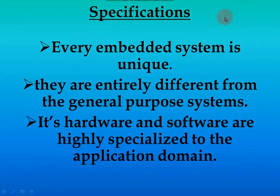Now, what are the specifications of an embedded system? Specifications means the special characteristics that an embedded system possesses. First: every embedded system is unique — meaning every embedded system, whatever it may be, is unique in its own way. The combination of hardware and software is different across different embedded systems. They are entirely different from general purpose systems.